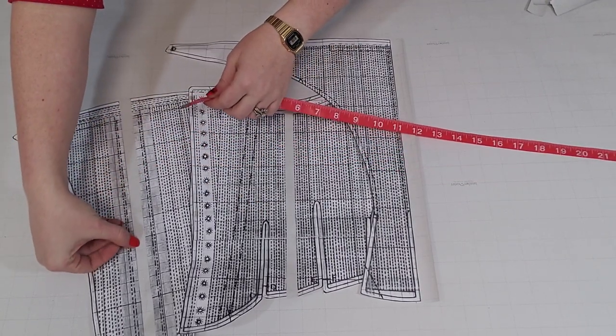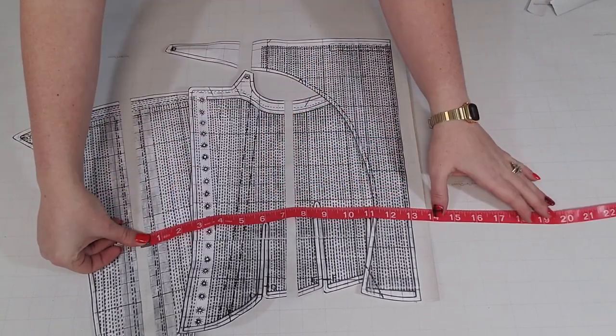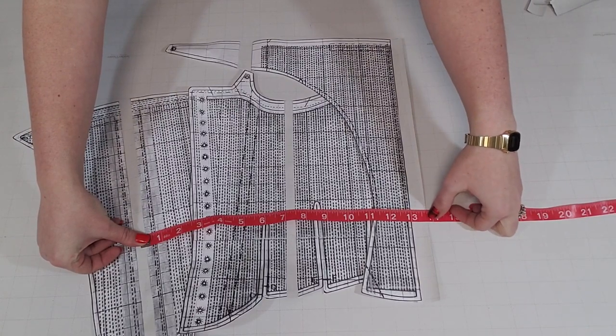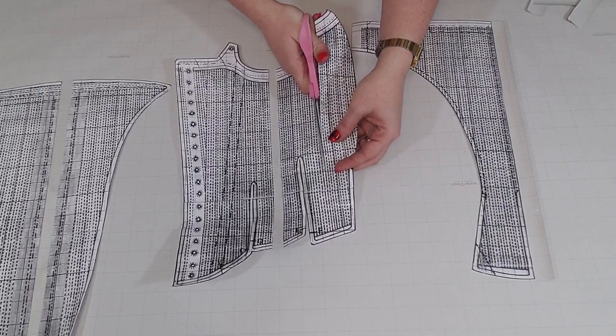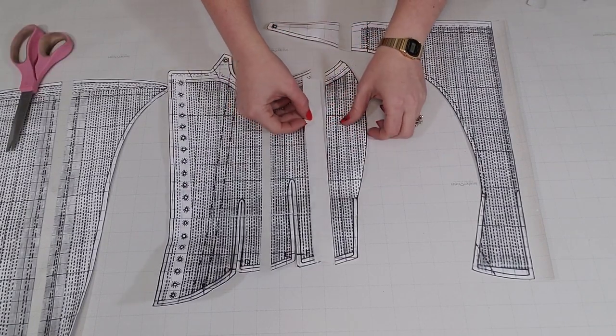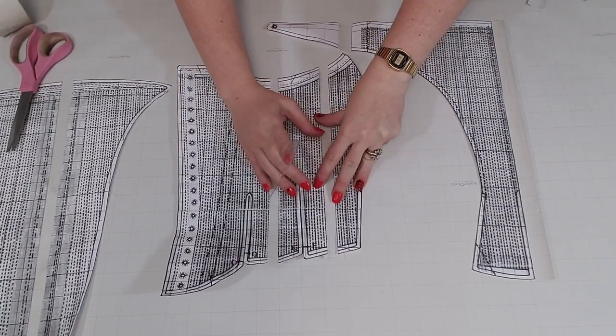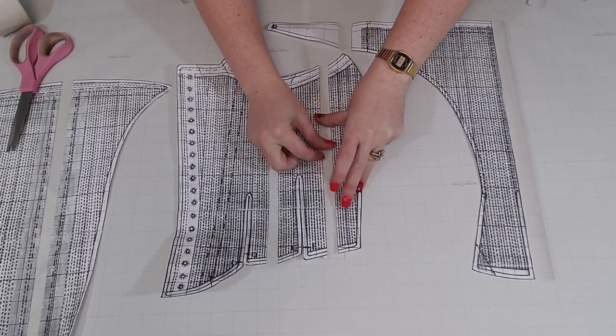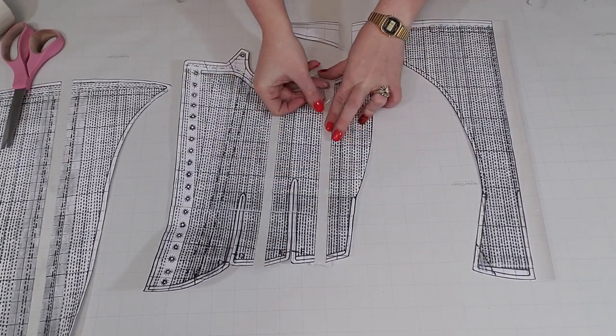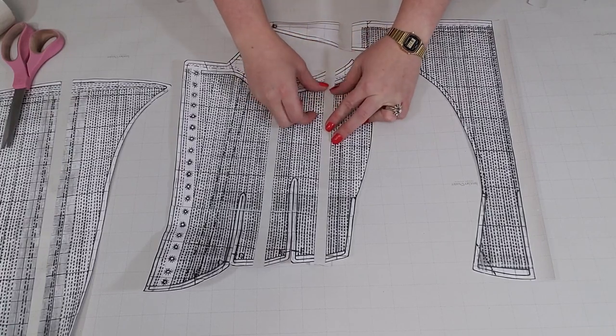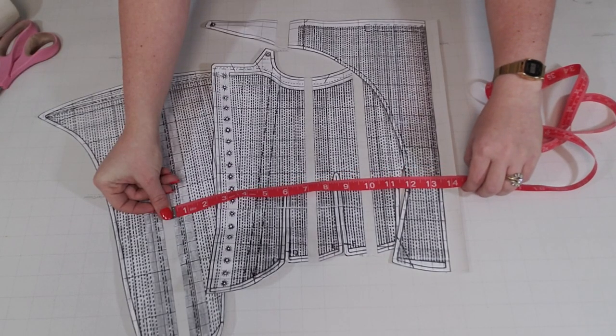Starting with the center of the stomacher, I'll measure the waist again, and it's close, but let's go ahead and add another strip. There we go, that's about right.